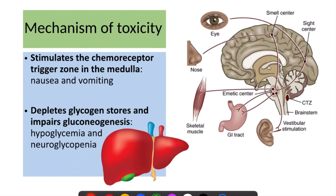They stimulate the chemoreceptor trigger zone in the medulla, which is responsible for nausea and vomiting. Moreover, they deplete glycogen stores and impair gluconeogenesis, which can cause hyperglycemia and neuroglycopenia.